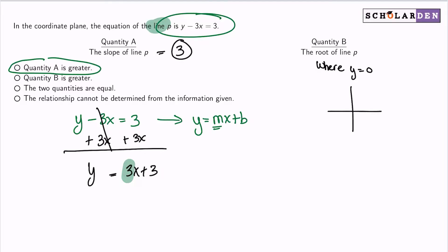So again, if we're drawing a graph, if I drew the line, that would be the root, the x coordinate of the x intercept. So what I want to do is I'll just go ahead and take that y minus 3x equals 3. And I'll just plug in y equals 0.